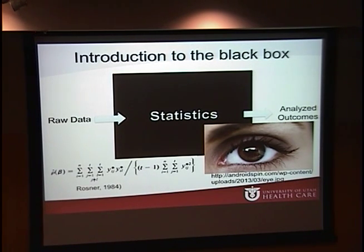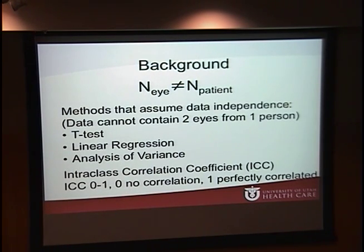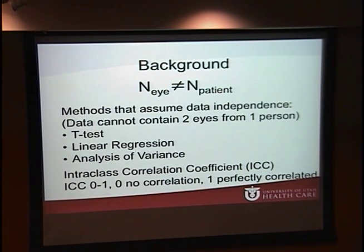I didn't realize the extent of the problem until I began a literature review. One of the key challenges in analyzing ophthalmologic data is that the number of eyes does not always equal the number of patients. When this is the case, we're collecting two eyes' worth of data from some individuals, meaning the data is correlated — two eyes from one person will always be more similar than two eyes from separate individuals. This lack of independence prevents use of standard analytic techniques.